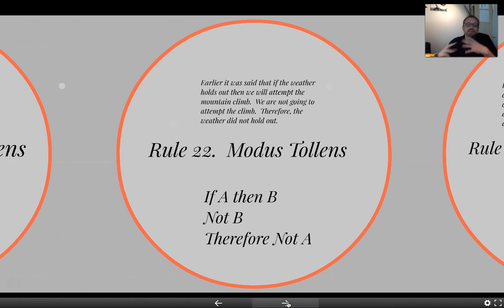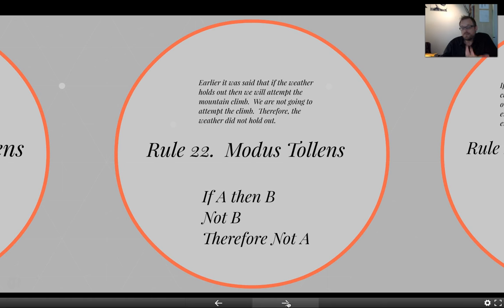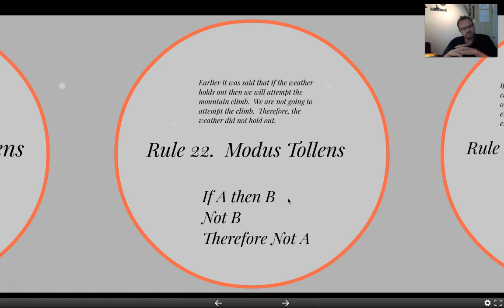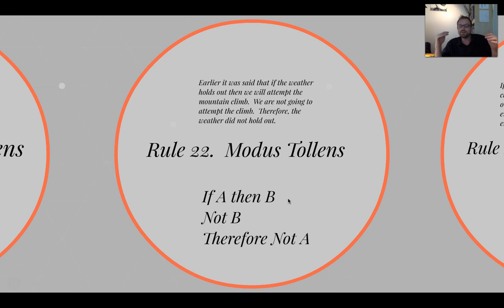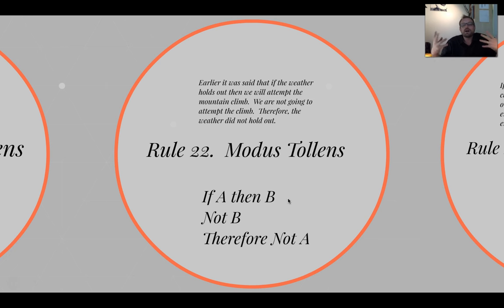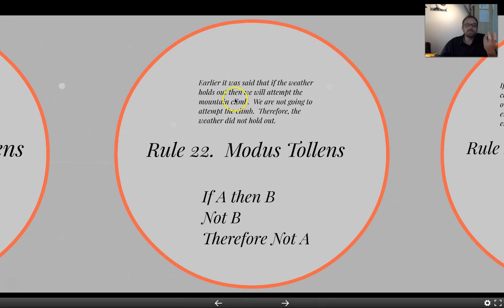Rule 23 is the modus tollens. The modus tollens structure is similar to modus ponens, but it has a negation in it. It looks like: if A, then B; not B; therefore not A. This should make sense — the modus tollens gives you a conditional situation: if A occurs, B will follow. B has not followed, therefore A must not have occurred. That's the basic common-language structure of the modus tollens.